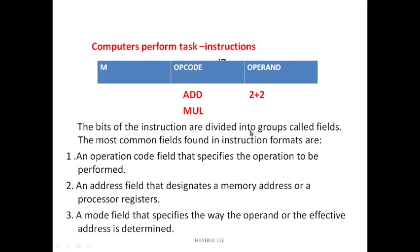The bits of the instruction are divided into groups called fields. The most common fields found in instruction format are: first, an operation code field that specifies the operation to be performed; second, an address field that designates a memory address or processor register; and third, a mode field that specifies the way the operand or effective address is determined.